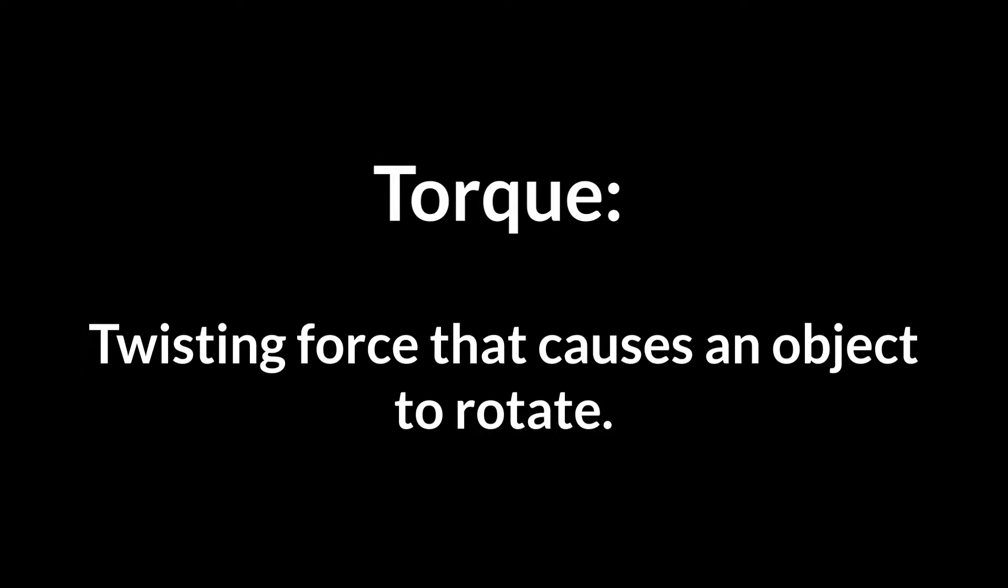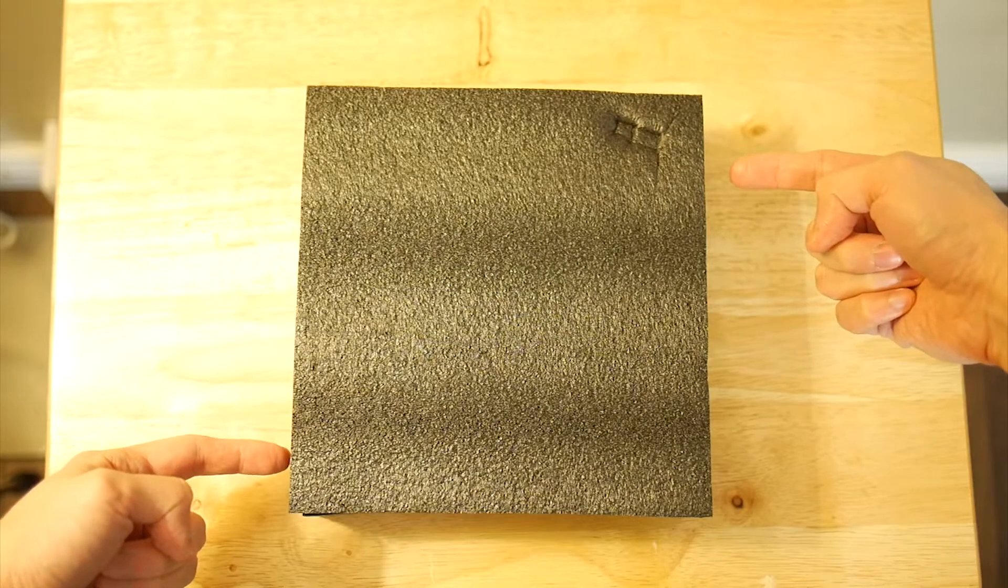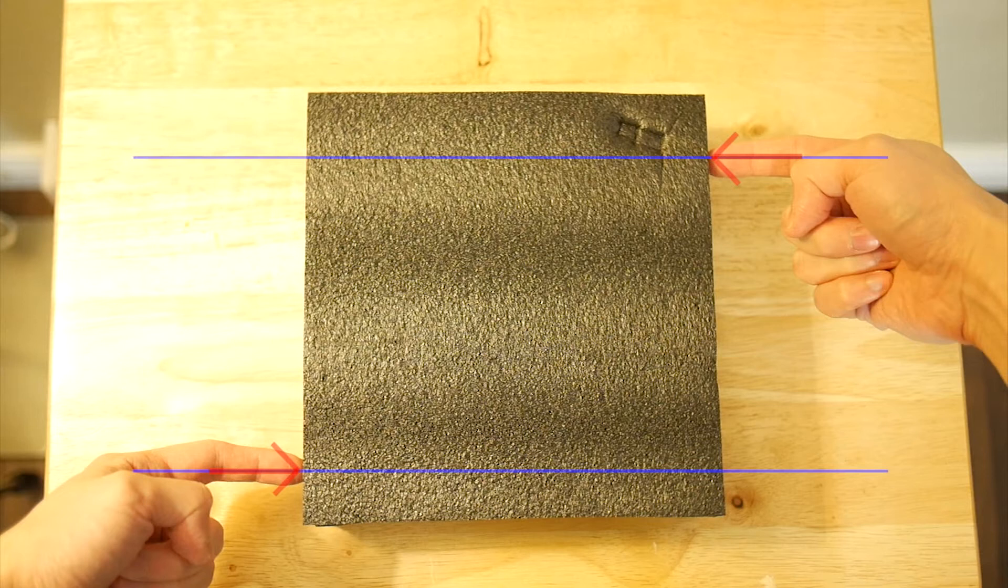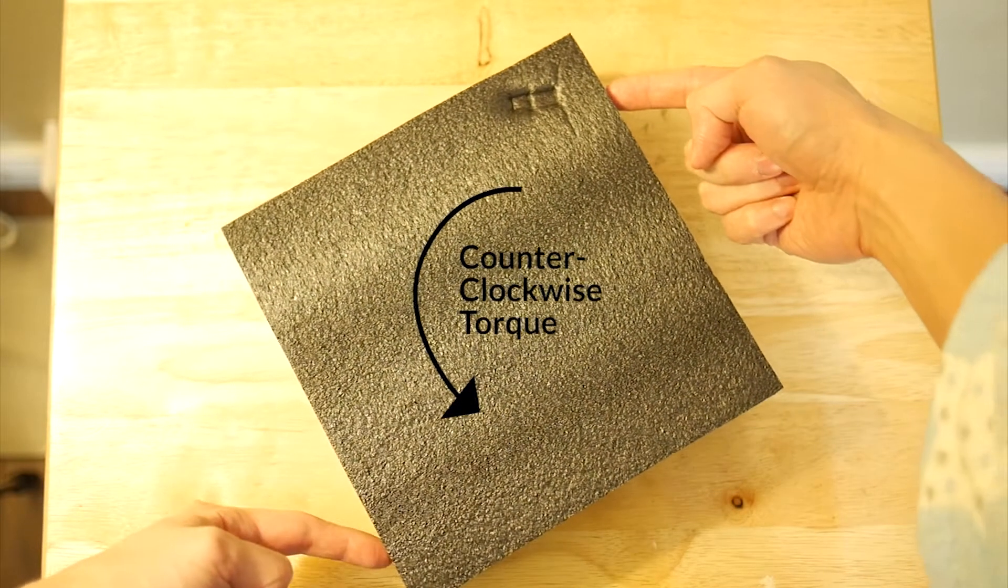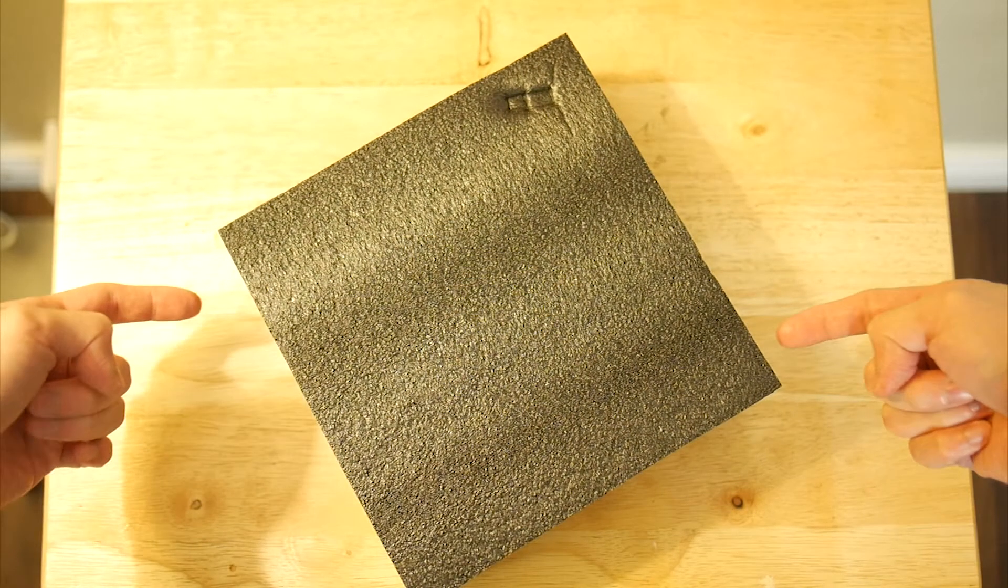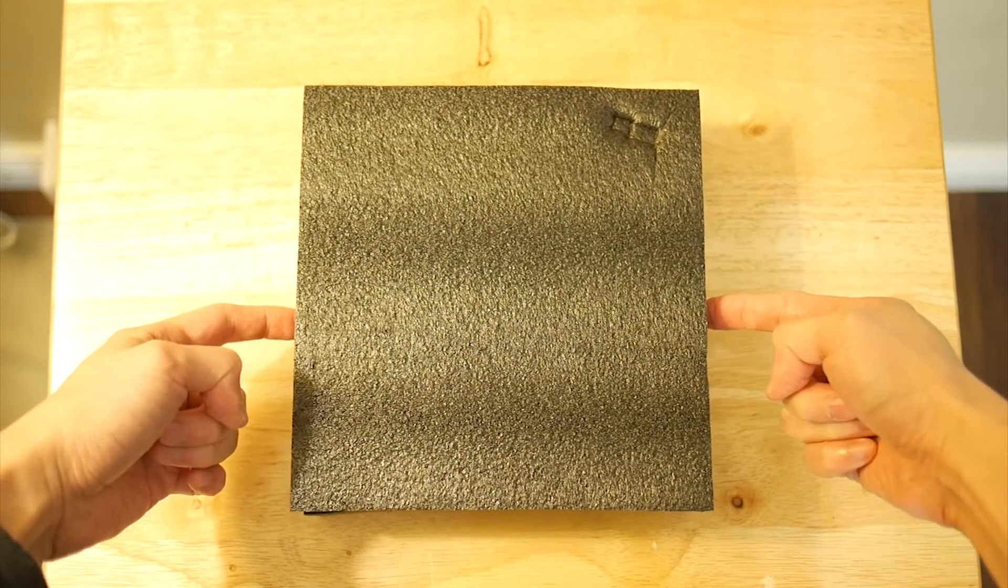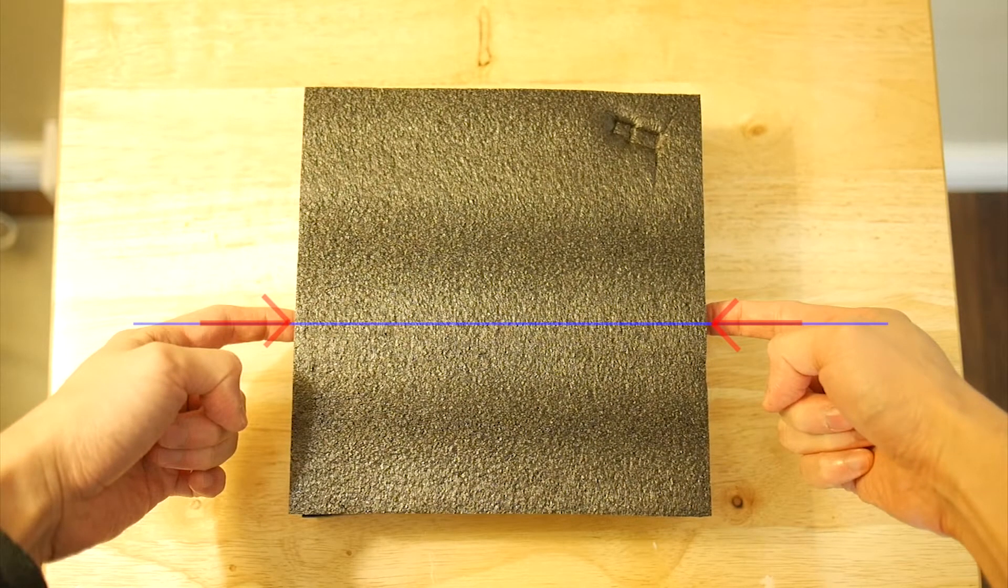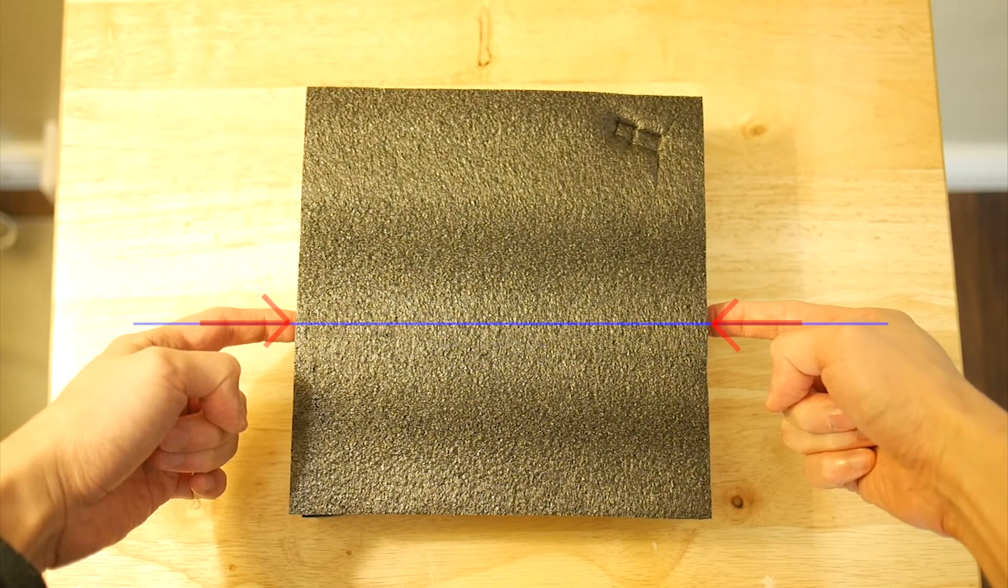The second concept is torque. Torque is twisting force that causes an object to rotate. One of the ways to create torque is to apply two opposite forces which are not aligned from each other. For example, if I apply force to this object like this, since the direction of forces are not aligned from each other and the directions are opposite, the torque is created, which makes this object rotate counterclockwise. However, if I apply the force like this, two opposite forces align each other, and the torque is not created.